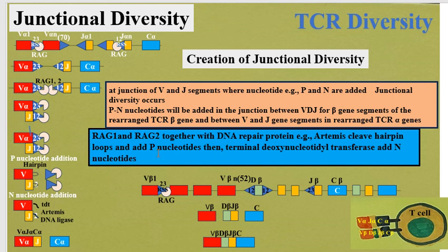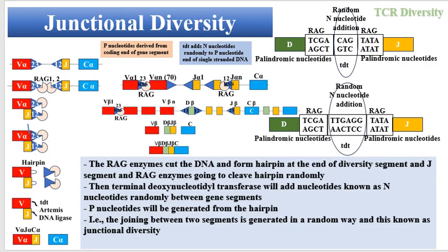P nucleotides are added at the ends of the gene segment. Then terminal deoxynucleotidyl transferase (TdT) adds N nucleotides. As can be seen here, this is a gene segment and this is a joining segment. At the end of the gene segment, the recombination activating genes start to cleave at this site, followed by addition of P (palindromic) nucleotides, which ends with a gap.